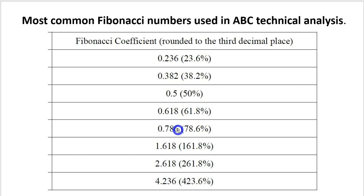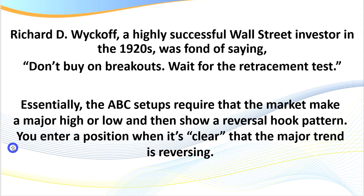I personally don't rank one Fibonacci level as better than another — I follow it because I've got thousands of members, but you'll see how I do it in a moment. Another really important thing with an ABC setup is that lots of traders will talk about waiting for a breakout. I want to wait for the hook — that is, we want to wait for the retracement test. It's also very good for picking market turns, and what we want to do is look for that reversal hook pattern.